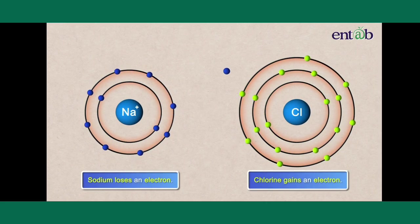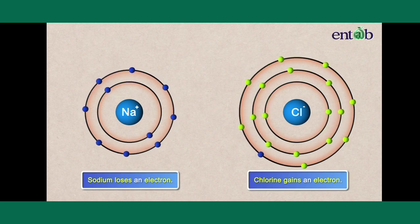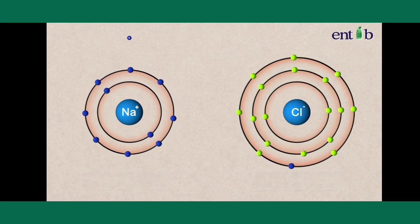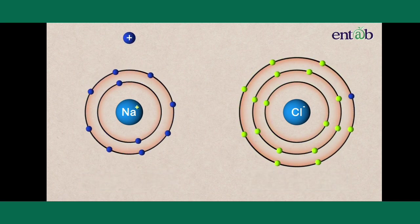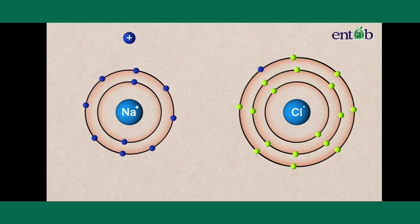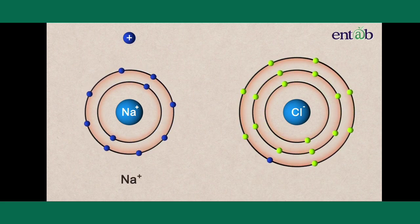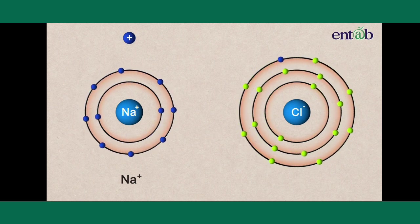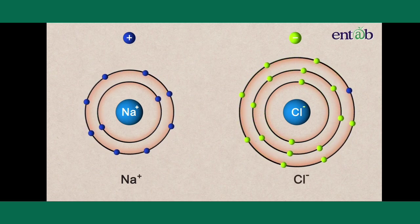Sodium will donate one of its electrons to chlorine. During this process, sodium will acquire a positive charge, which can be shown as Na+. While chlorine will acquire a negative charge, denoted as Cl-.